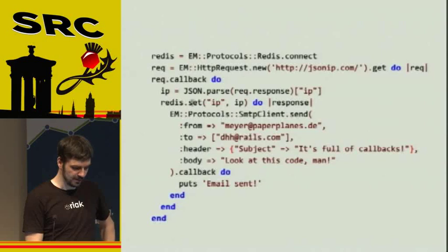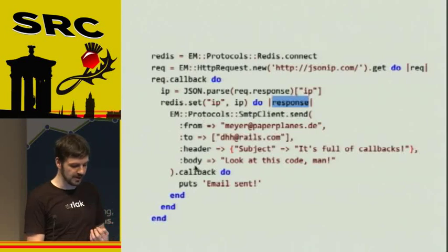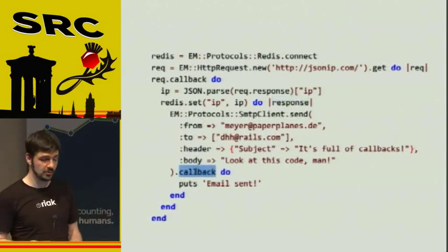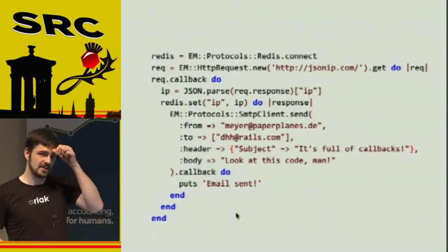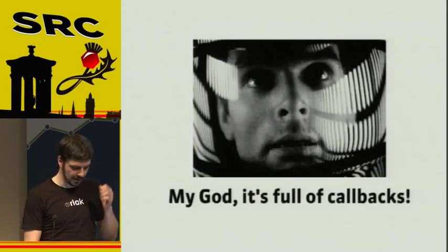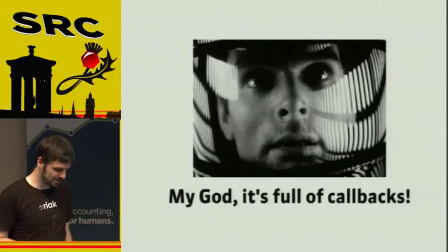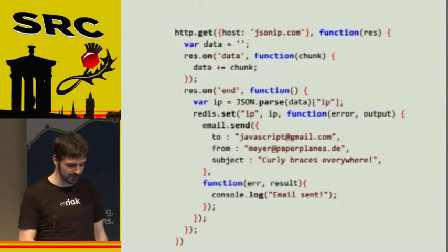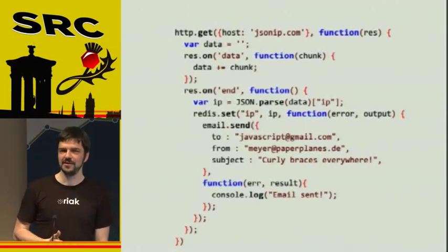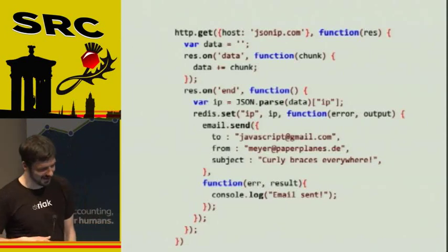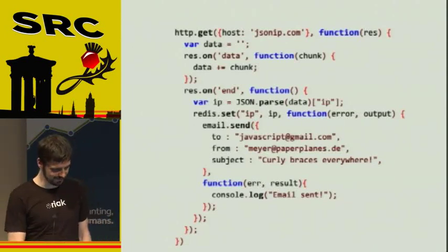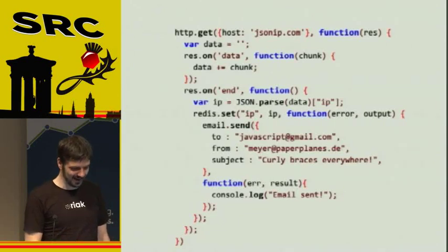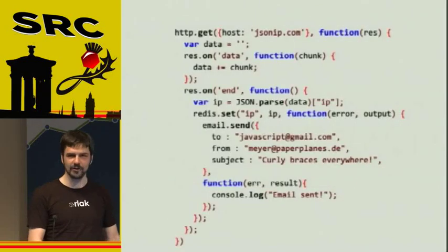Whenever the Redis command is set, you get a response. And when that response comes in, you send an email and give that another callback so that you can tell the user: okay, your email was sent. This is a stupid example, but you get the basic idea of how terrible callbacks can be. And here's an example of how that would look in Node.js — look at all the curly braces. I'm not hating on Node.js here; I just hate curly braces. It's not that different — it's not that much more code, just a lot more curly braces.